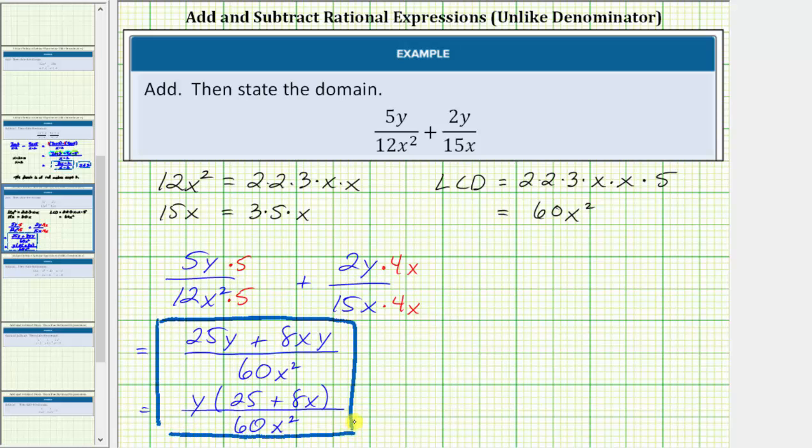But we also need to state the domain, so we begin with all real numbers, and exclude the values that make the denominator equal to zero. Looking at the denominator, notice how the denominator is equal to zero when x equals zero, which means the domain is all real numbers except zero, which we often indicate by just saying x can't equal zero.